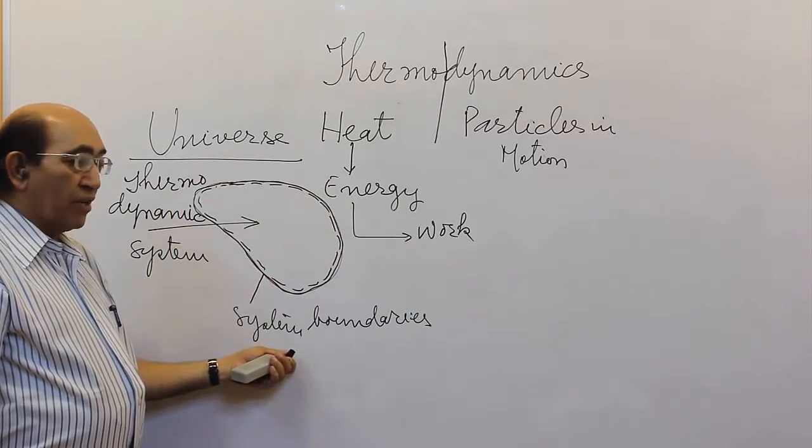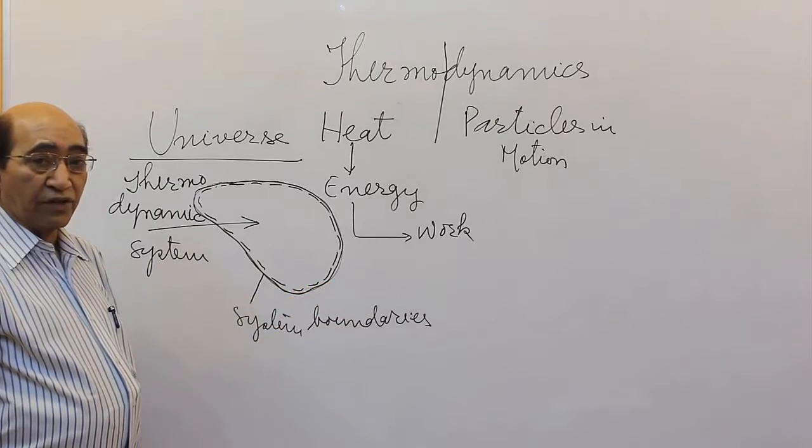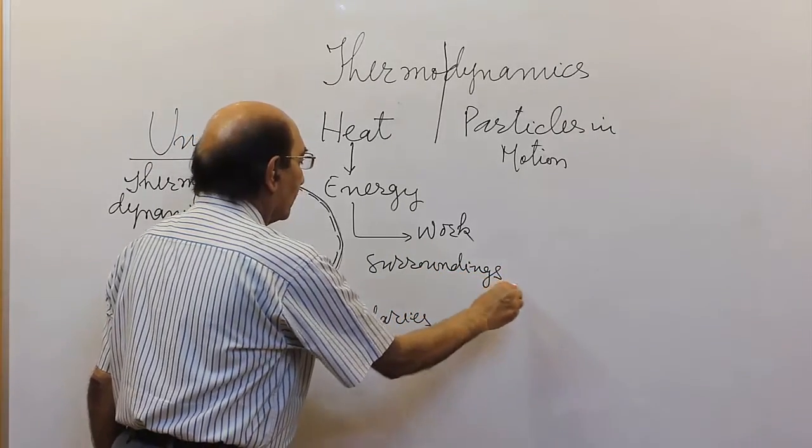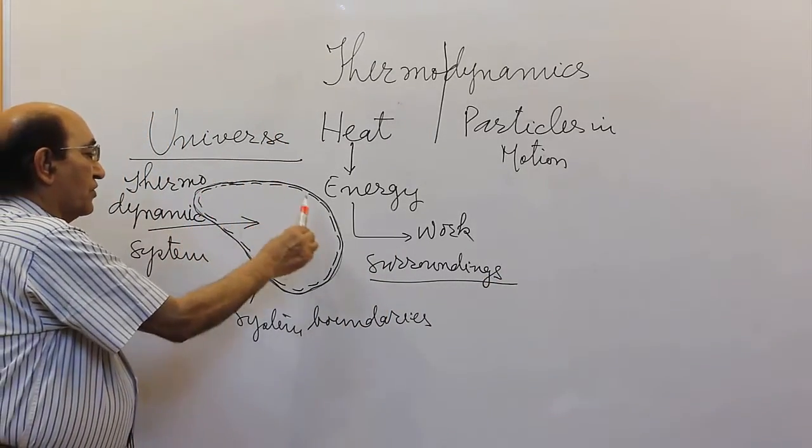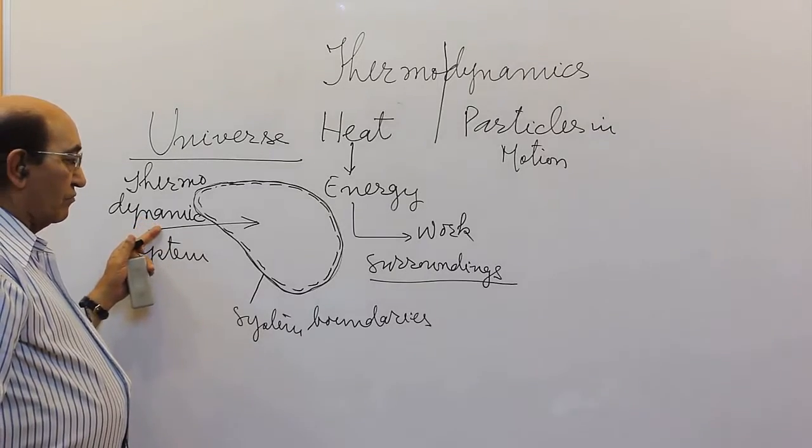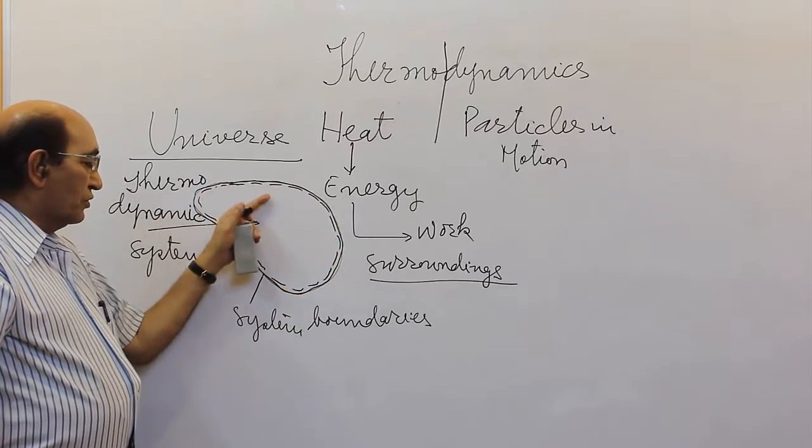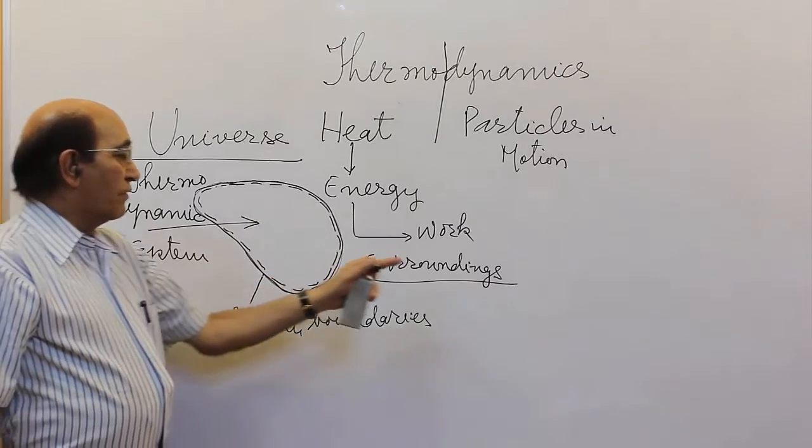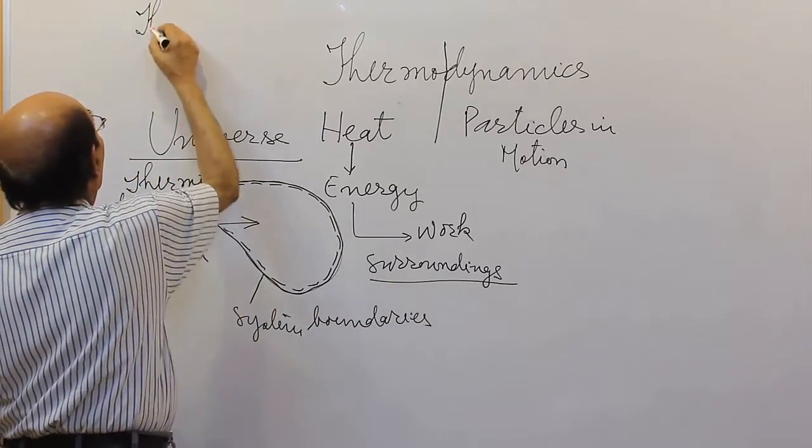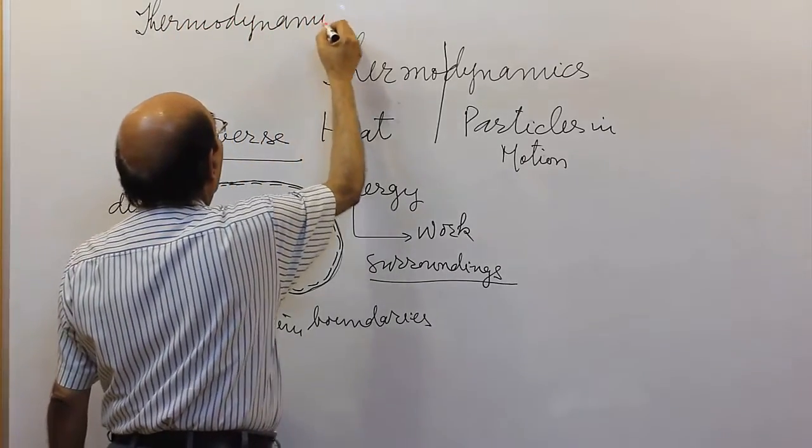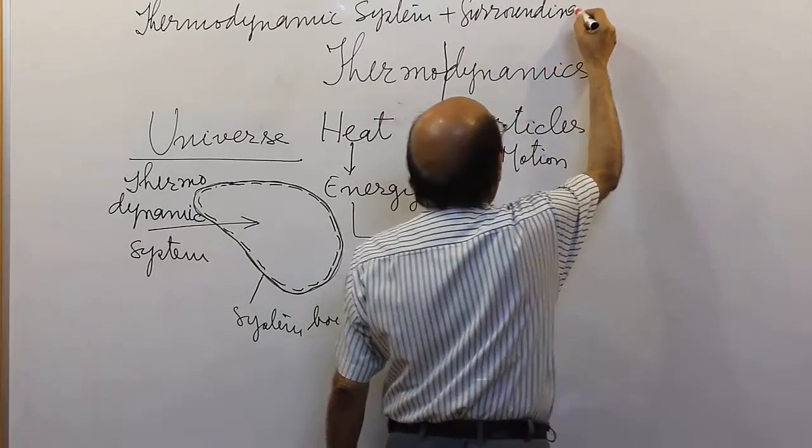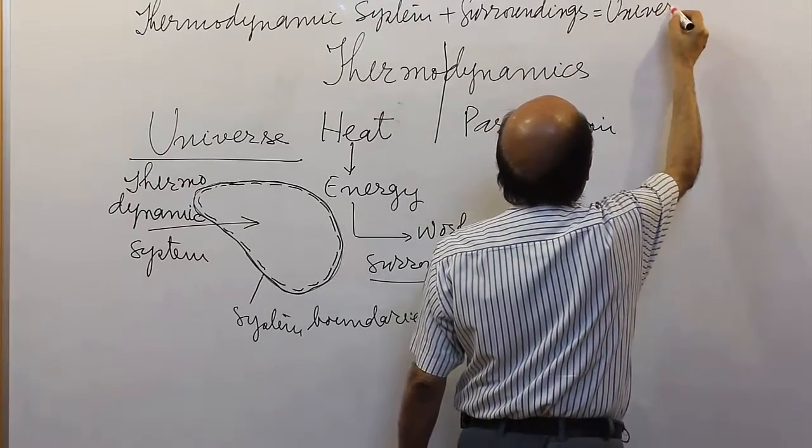These surfaces we have named as the system boundaries. How about the things external to it? External to it shall be called as surroundings. That means any region in space upon which our attentions are focused to study shall be referred as a thermodynamic system, and the surfaces with which this system can be distinguished are called system boundaries, and everything external to the system shall be termed as the surroundings for the system, such that the thermodynamic system plus surroundings shall be called as the universe.